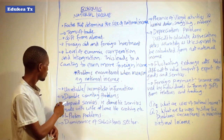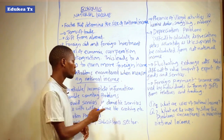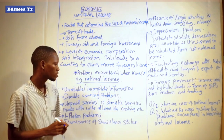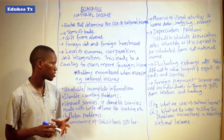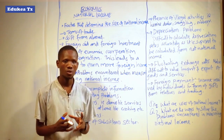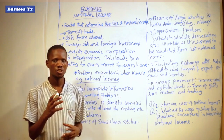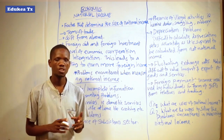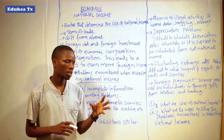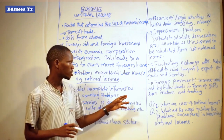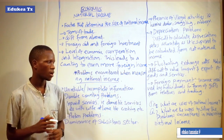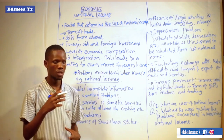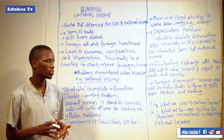Another problem is double counting. This occurs when different goods and services are included twice in the process of enumerating national income — the same commodity has been counted twice when calculating national income. This occurs with commodities or services which pass through multiple stages of production.